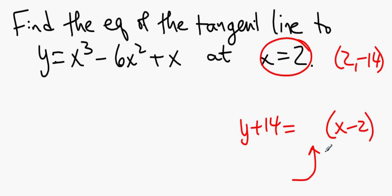And to find the slope, I'm going to take a derivative. I'm going to find out what y' is. The derivative of x³ is 3x² minus the derivative of x² is 2x¹ times 6, and the derivative of any line is its slope.